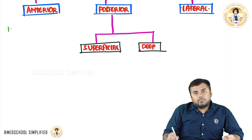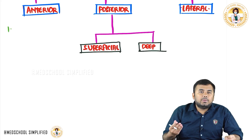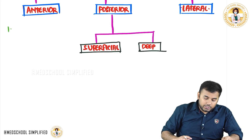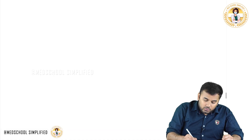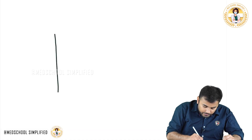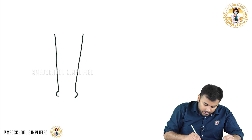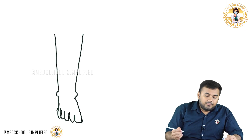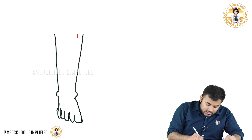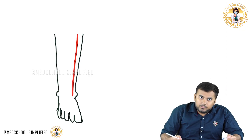The first important muscle located anterior to the tibia is called the tibialis anterior muscle. I'll draw it to make it easier to grasp. This is the leg part, this is the medial malleolus, this is the lateral malleolus, and this is the foot with toes one through five. The muscle exactly present anterior to the tibia is called the tibialis anterior.